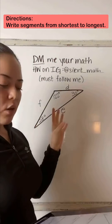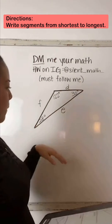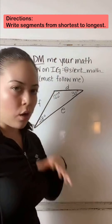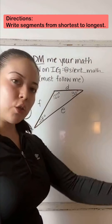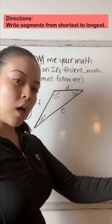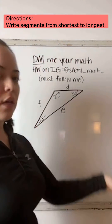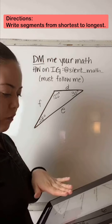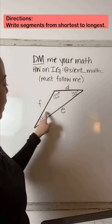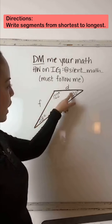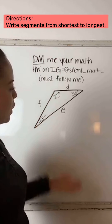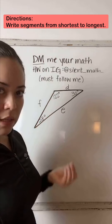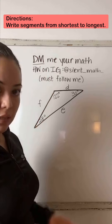Part B. The shortest side lengths of a triangle are always directly across the smallest angle in your triangle. So the directions are from shortest to longest. If we compare our three angles, which angle is the smallest? That's going to give you your shortest side.